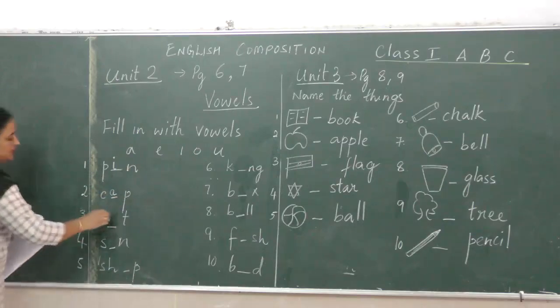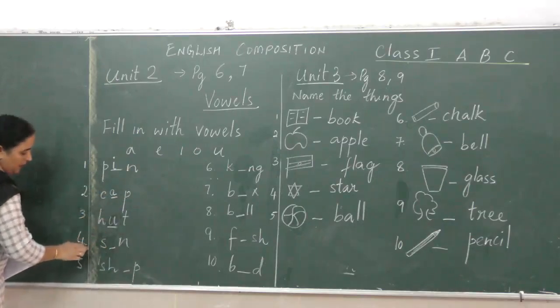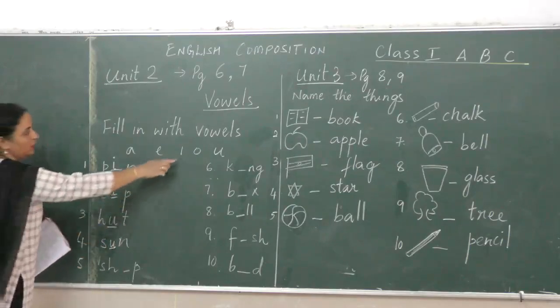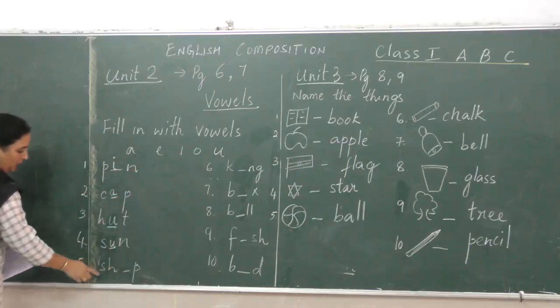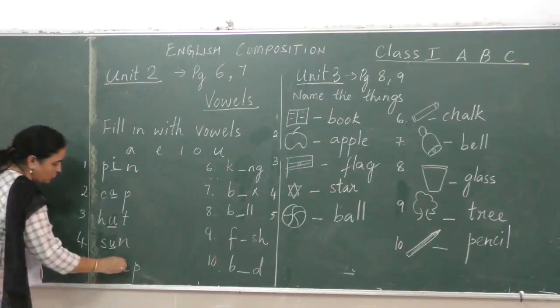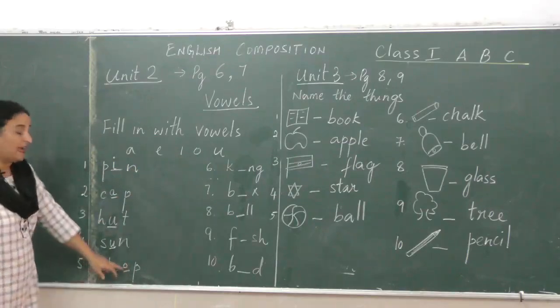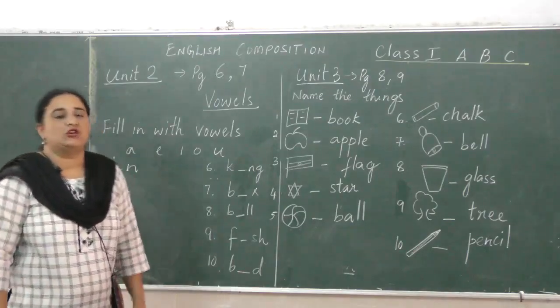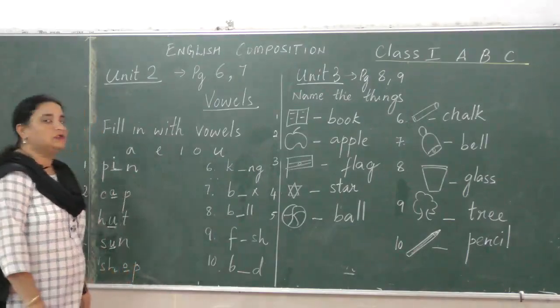Then you have H-U-T, HUT. S-U-N, sun. You have to take the word from here, the vowel. S-H-O-P, shop. So you take the alphabet O and make it shop. You can also write ship, S-H-I-P, ship is also a proper word.